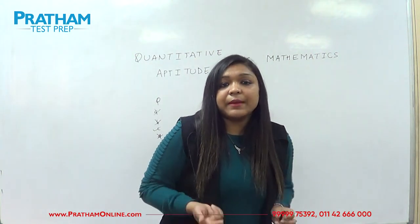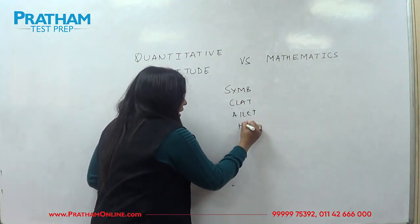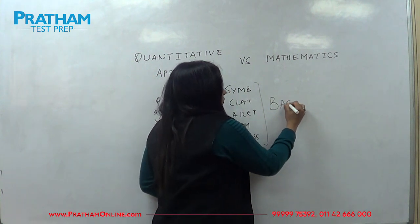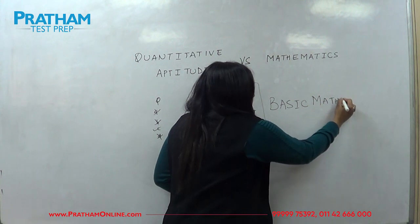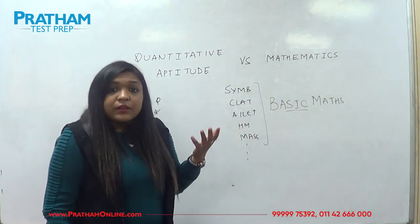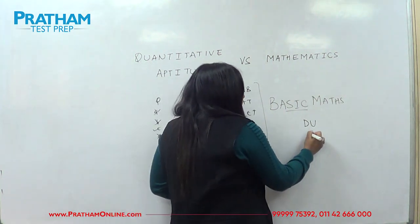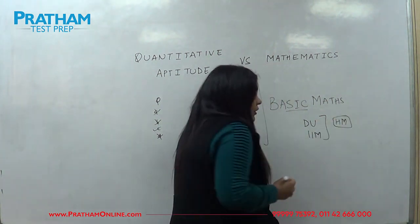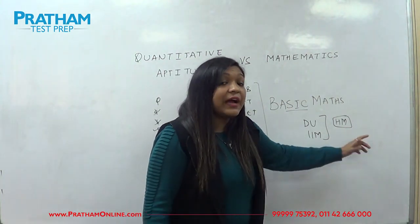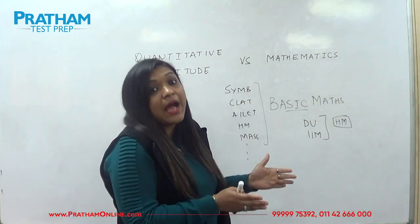The specific topics depend on which university exam you are taking. For exams like Symbiosis, CLAT, ILIT, hotel management, or mass communication, they ask basic maths — topics like profit and loss, percentage, number system, time speed distance, time and work, and simple interest. But for universities like Delhi University or exams like IPMAT and law, higher mathematics is also included — topics like differentiation, integration, limits, and continuity. Even for those, there will be a question with four options, meaning there will be shortcut tricks to solve higher mathematics questions as well.